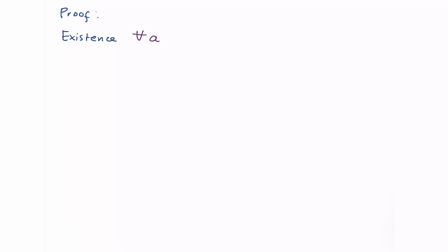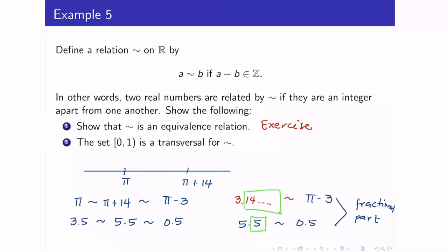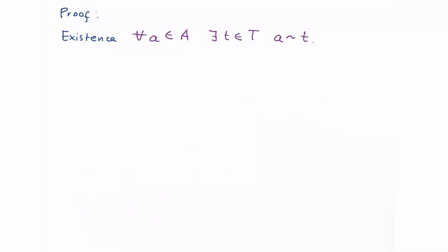To prove that T is a transversal, we have to show two things. For existence, we need to show that for any a in A there exists a T in the half-open interval [0, 1) such that a is related to T. We start: let a be an element of R. To prove the existential statement, take T equal to a minus the greatest integer of a — that is, the fractional part. For example, 5.5 minus ⌊5.5⌋ = 5.5 − 5 = 0.5.